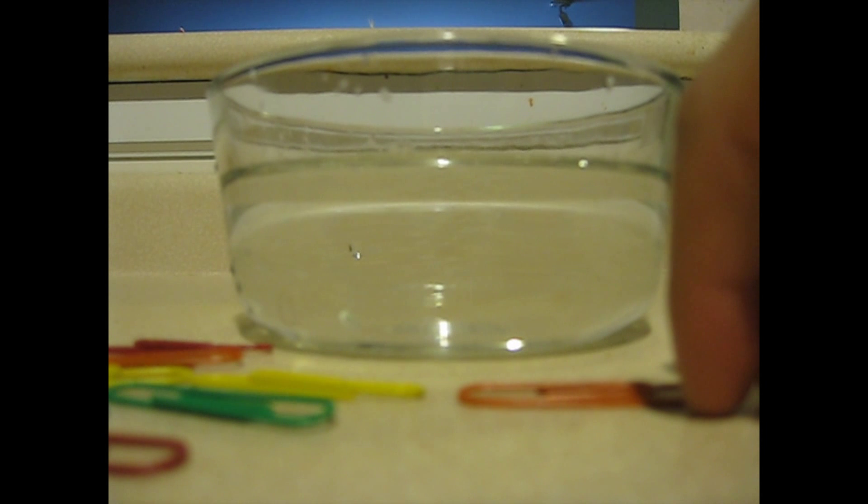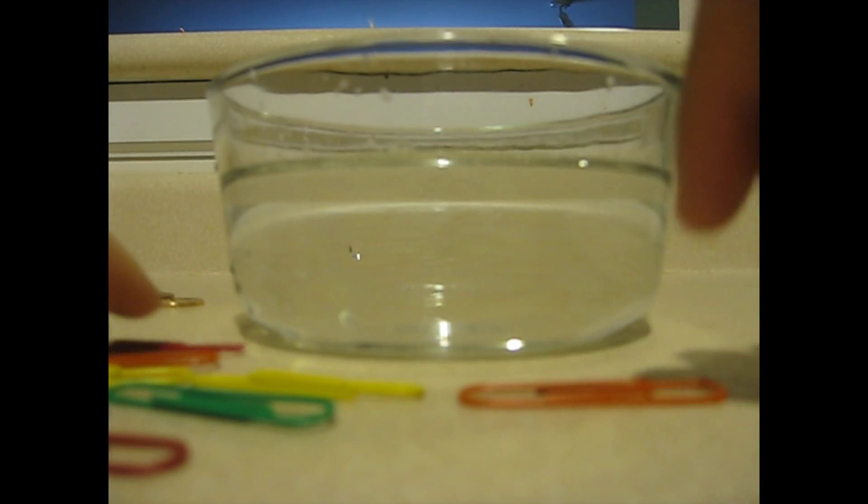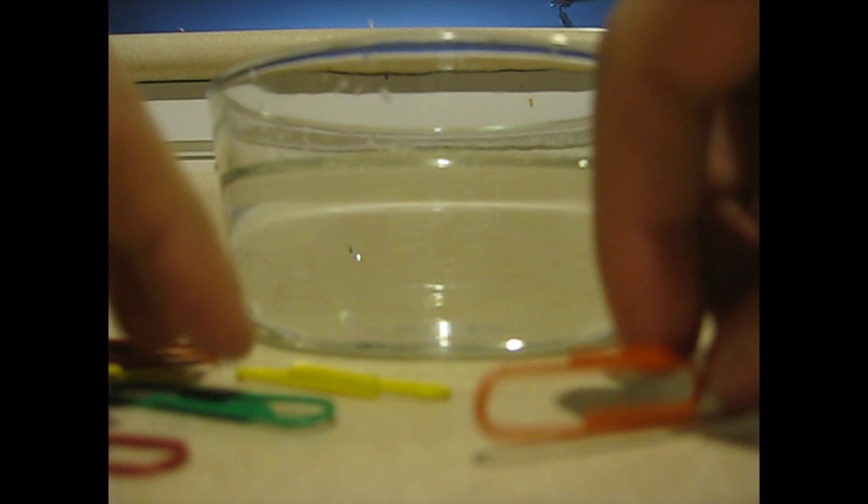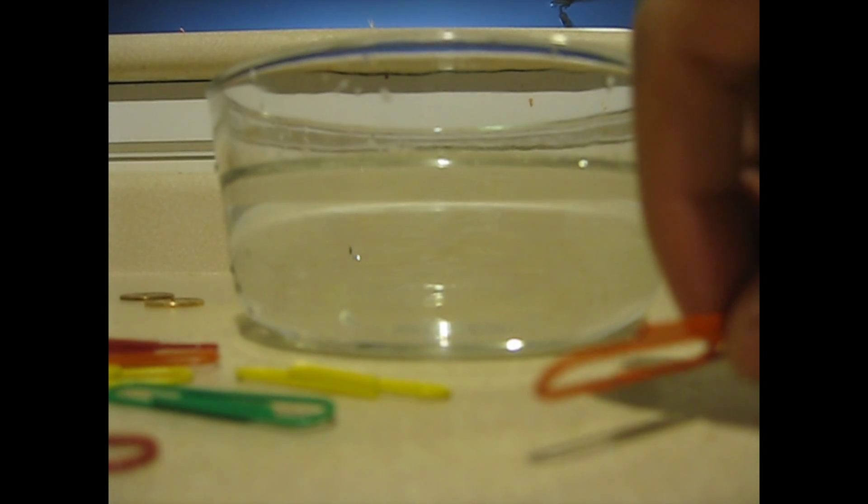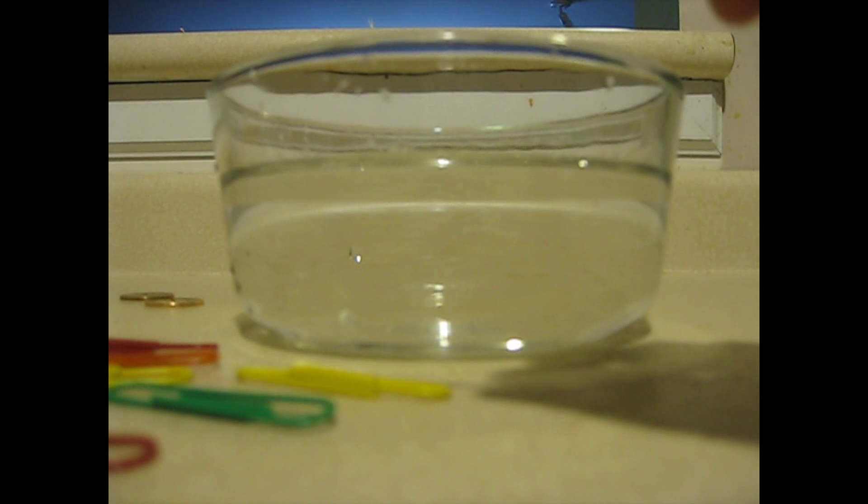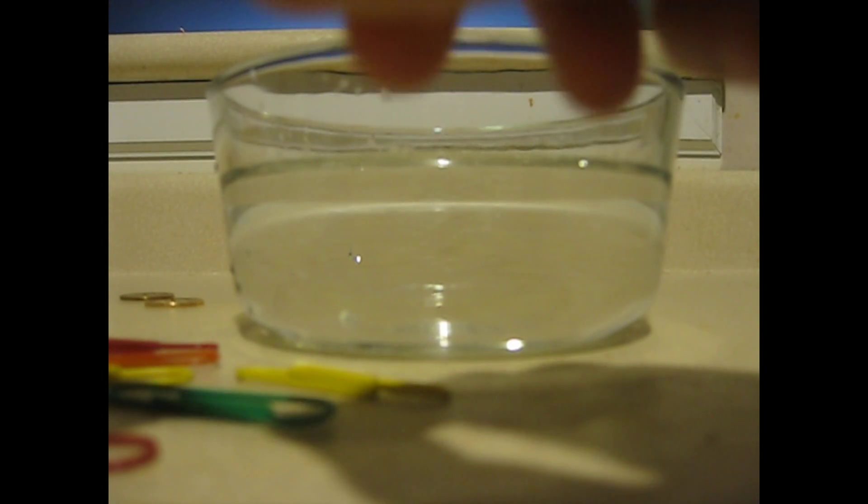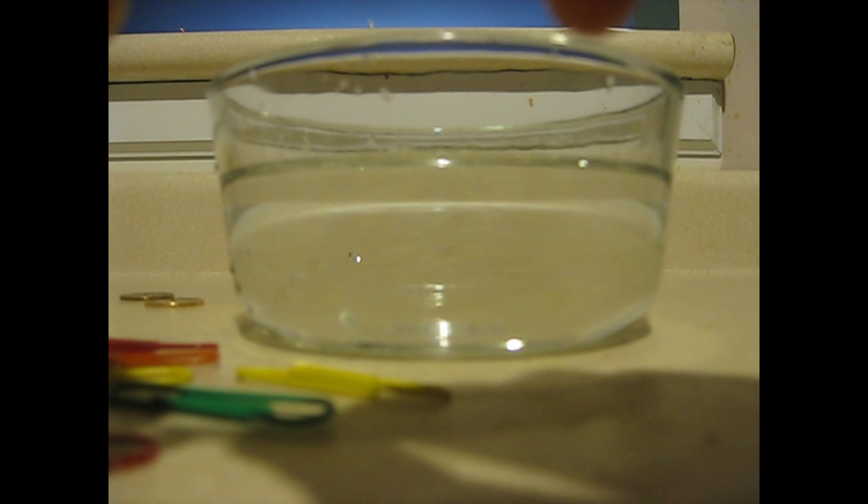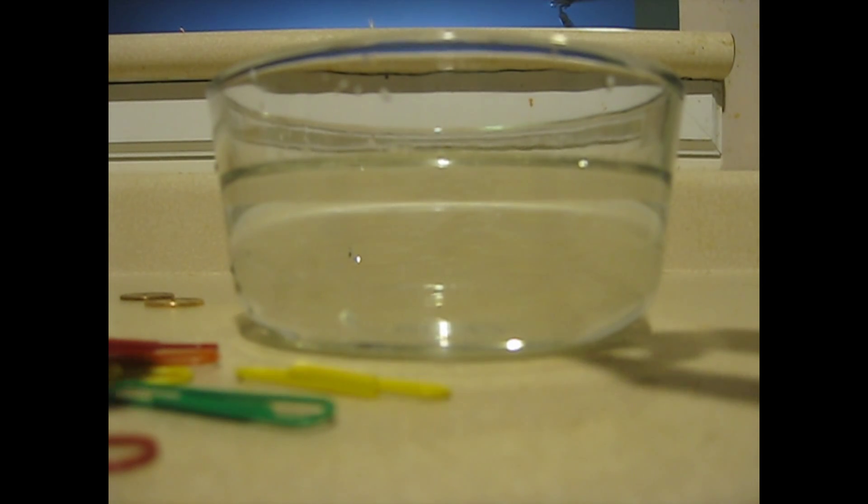So ask one of your good friends and ask them to put one dollar on the table, and you will put another dollar on the table. And you're going to challenge them and say, first person to make a paperclip float on water gets the money, and then tell them it's their turn so they can go first.